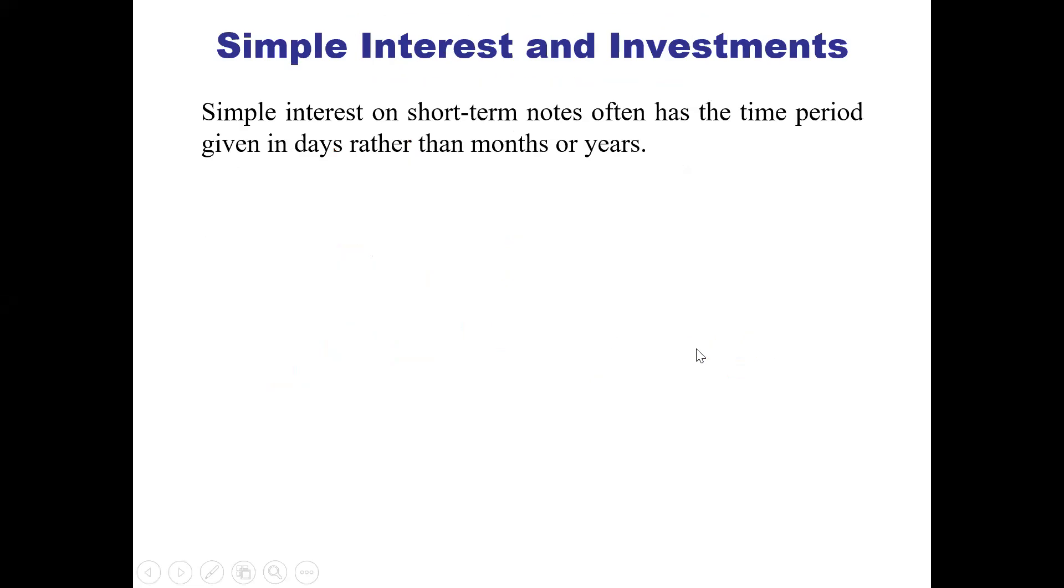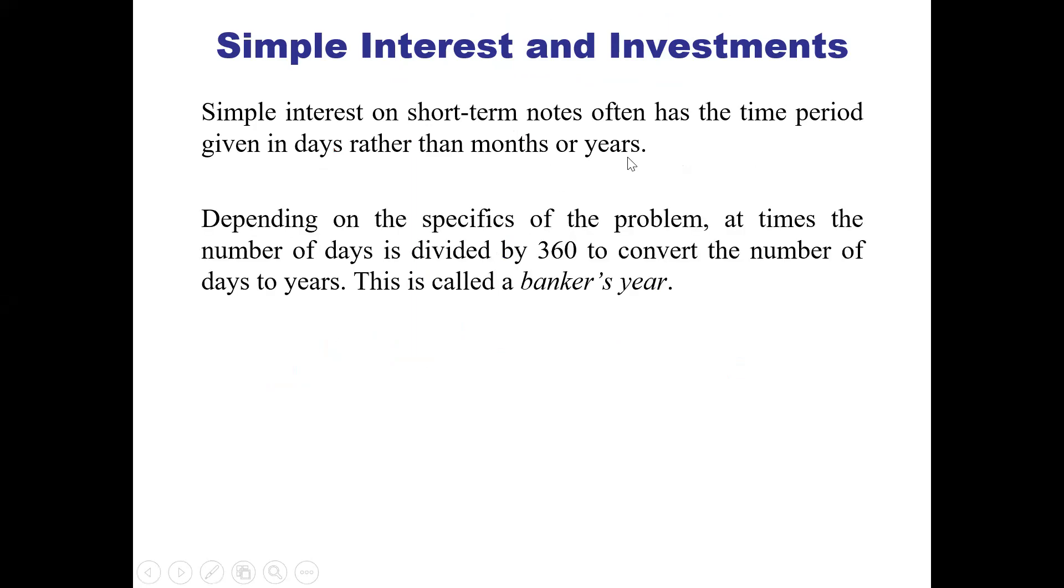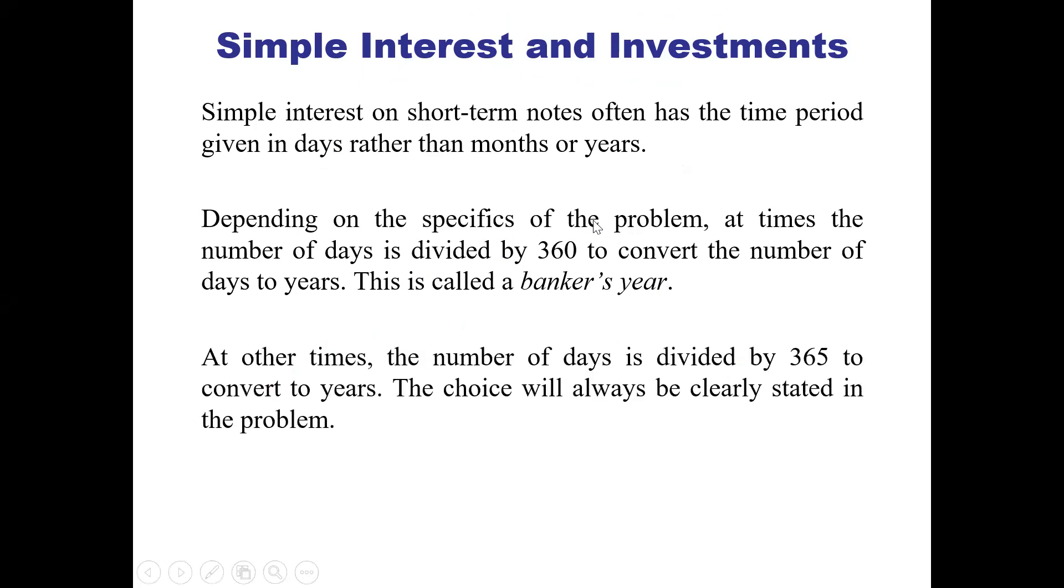Simple interest on short-term notes often has the time period given in days rather than months or years. Depending on the specifics of the problem, the number of days is divided by 360 to convert to years—this is called a banker's year.